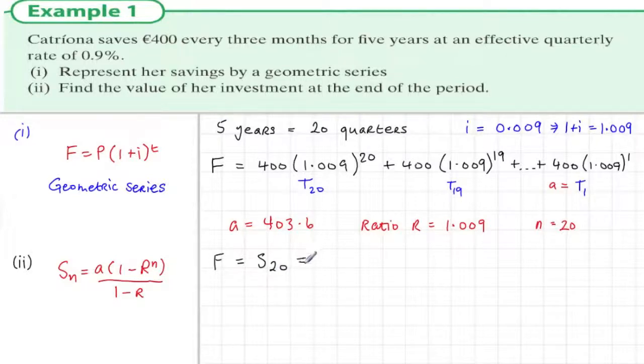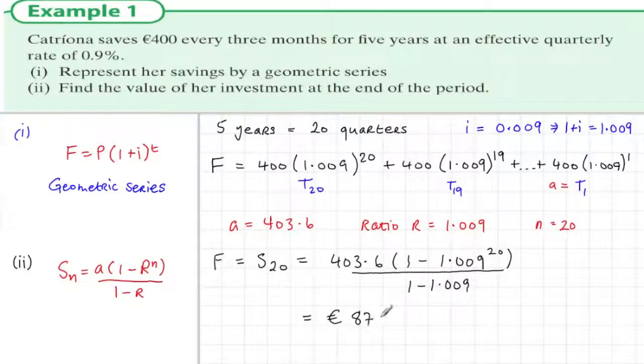So the future value is the sum of this series. We sub in the values we have: 403.6 times 1 minus 1.009 to the power of 20, all divided by 1 minus 1.009. Carefully subbing these values into the calculator, our answer is 8787.81.